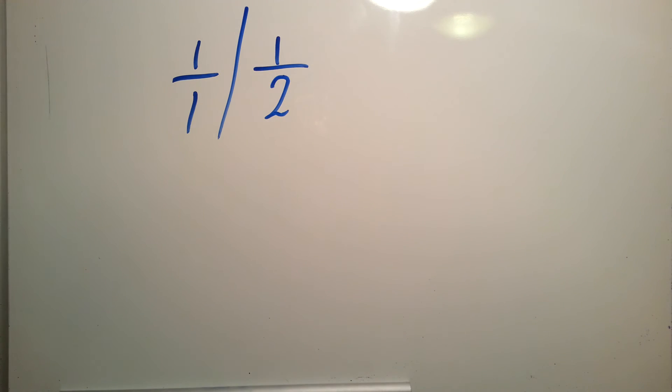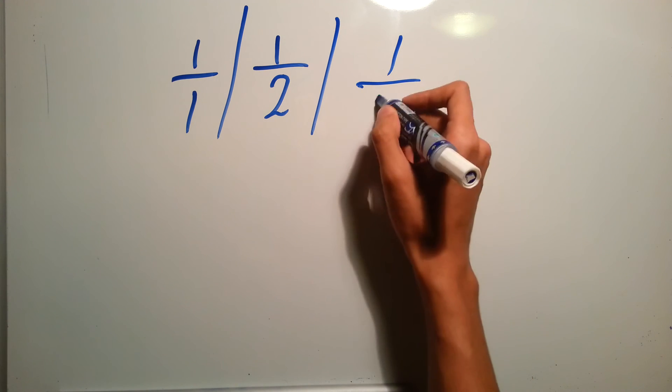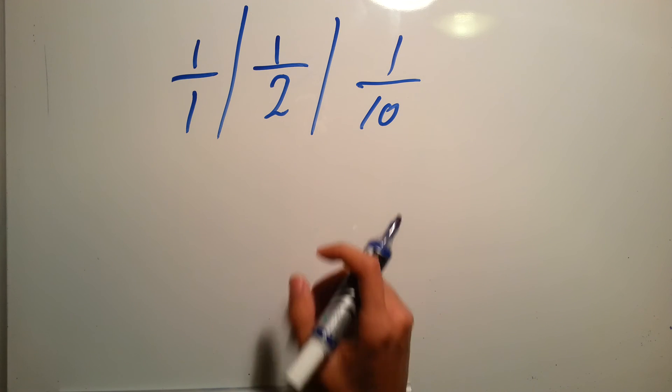And let's say I got more friends, ten friends, then you'll have one over ten which is smaller. And the more friends I bring, the smaller the piece of candy that you will get.